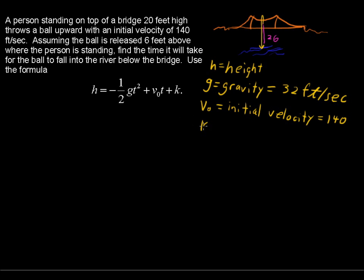And k is the initial height. The bridge is 20 feet high, and the person releases the ball 6 feet above that. So we know that the initial height is 26 feet.